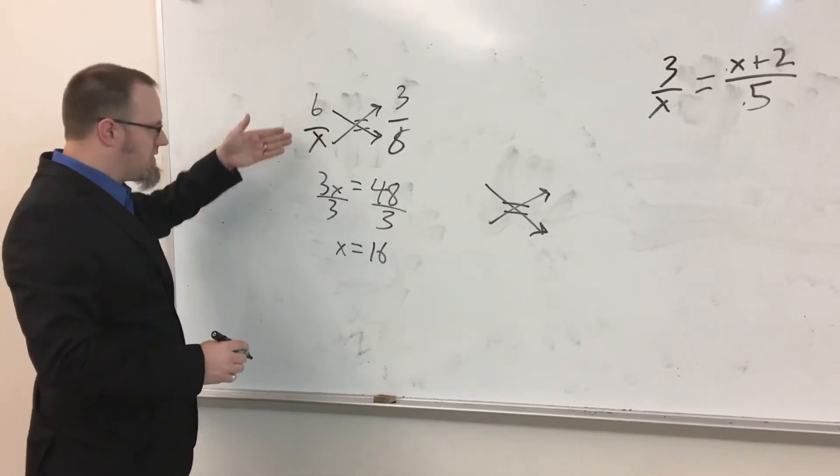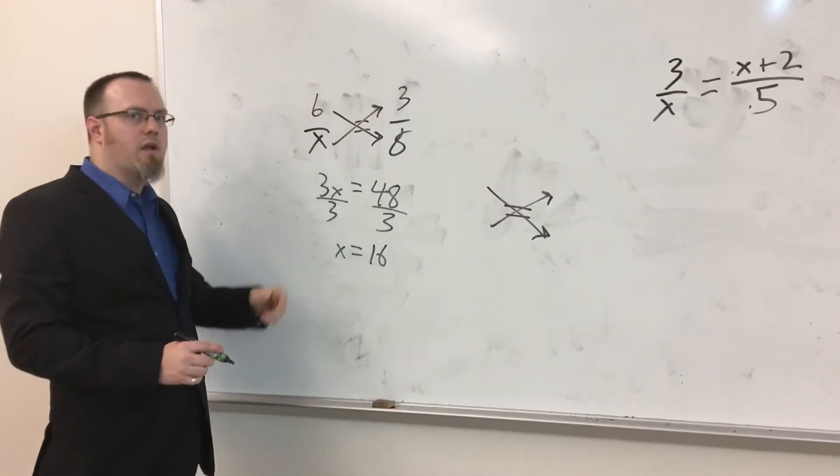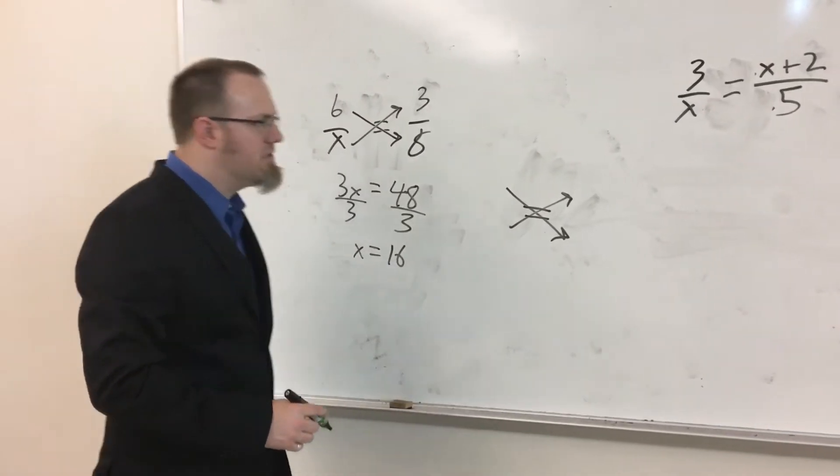When we put this back in, 6 over 16 reduces to 3 over 8. So we can tell that they are equal. You put your number back in, you check.